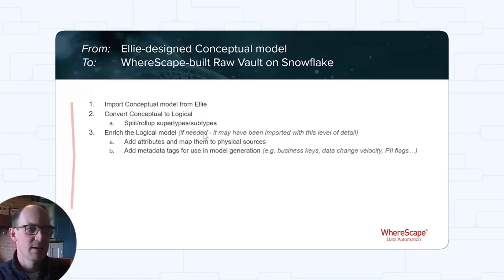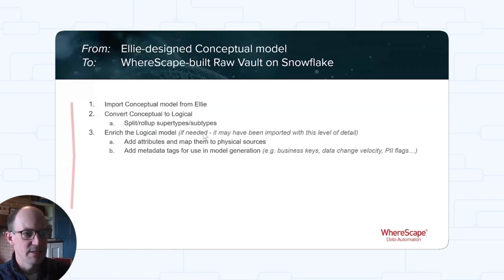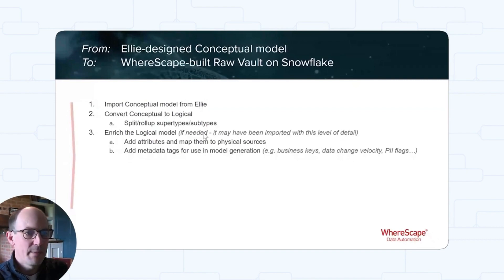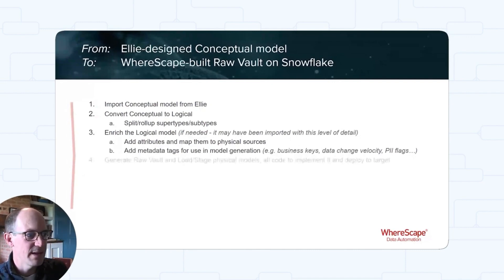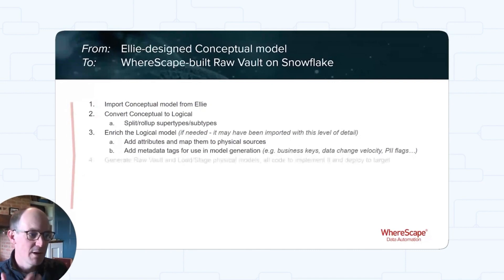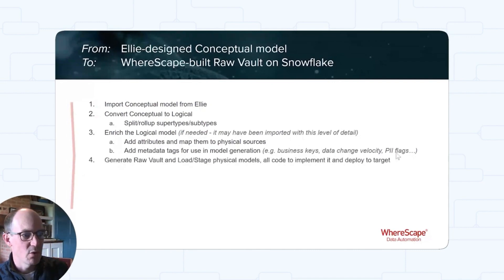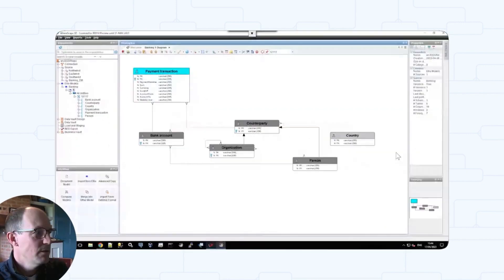We tag things like business keys, how often the data changes, and any personally identifiable information flags. Once we've done that, there's enough metadata to generate the raw vault, all the loading and staging models, and all the code needed to build and deploy it. Let's see what that looks like in Warescape 3D.